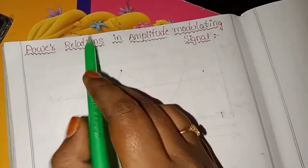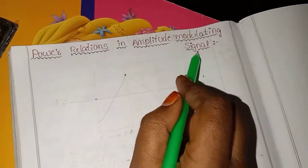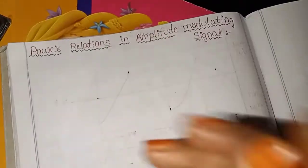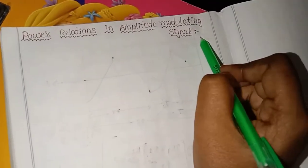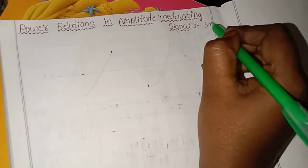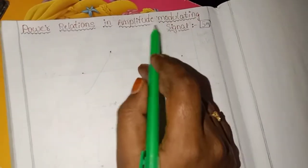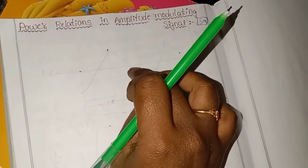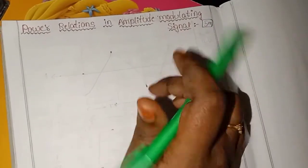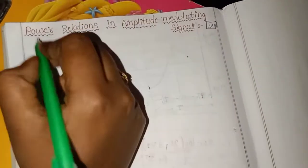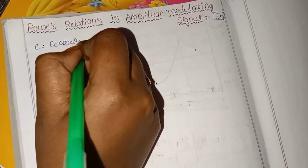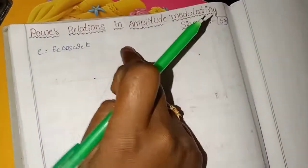Today our topic is Power Relations in Amplitude Modulation Signal. This is the derivation part of the question — Power Relations in Amplitude Modulating Signal.